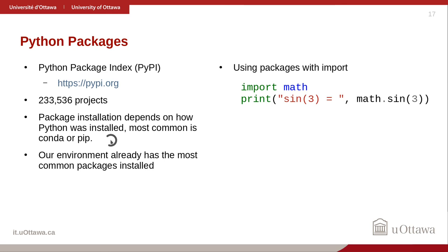Installing Python packages can be done with conda or pip — common Python development environments. Conda lets you download Python and packages; pip is part of Python and also downloads packages. We won't cover installation here because it depends on the operating system and so many other things — it's hard to get everyone on the same page. The Jupyter notebook environment we'll use already has all common packages installed, so we don't need to worry about installation.